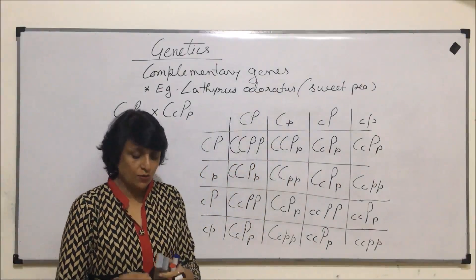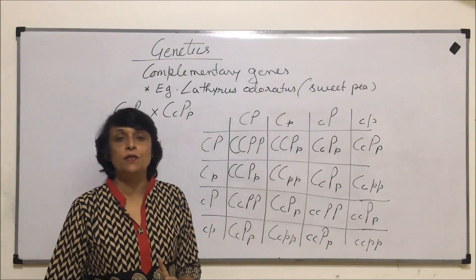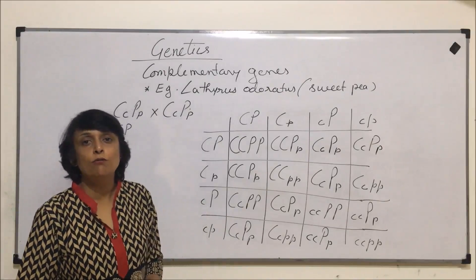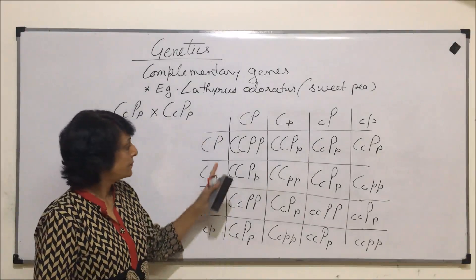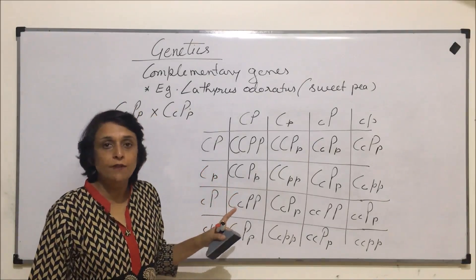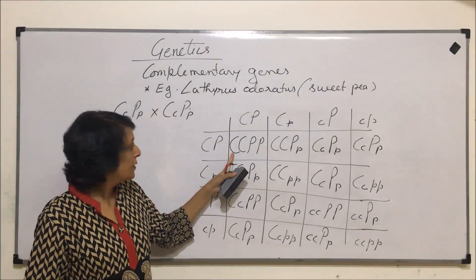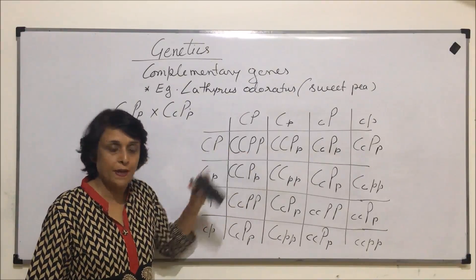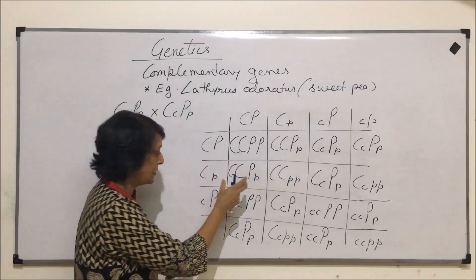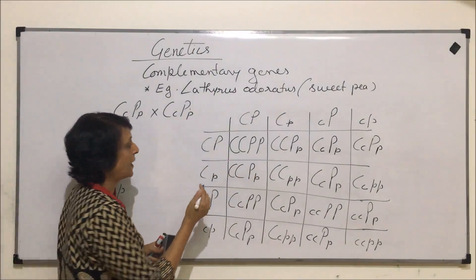Now we determine the flower color for each of the 16 offspring. The rule is that we need at least one dominant C and at least one dominant P to produce the purple color. Both enzymes must be present: one synthesized by dominant C and the other by dominant P. Any genotype carrying at least one capital C and one capital P will give purple flowers.